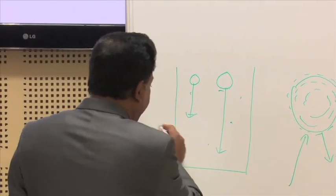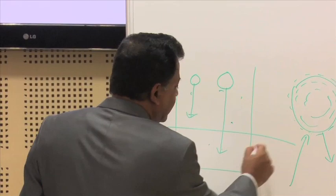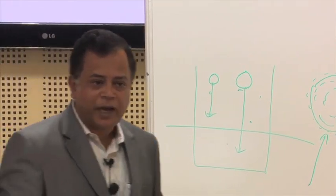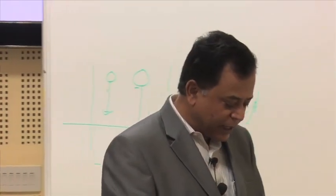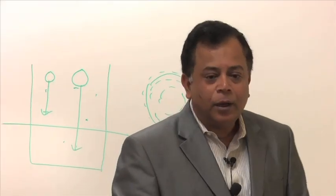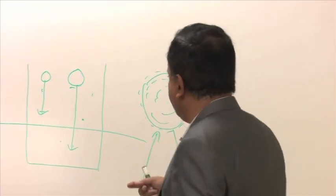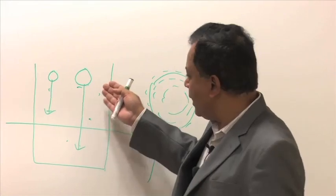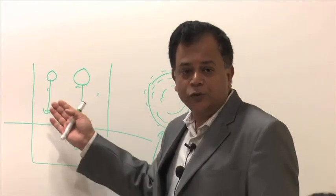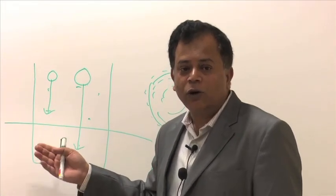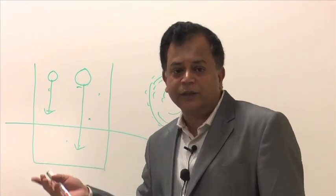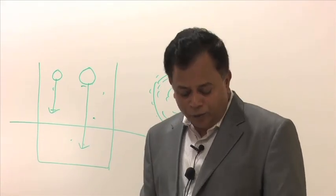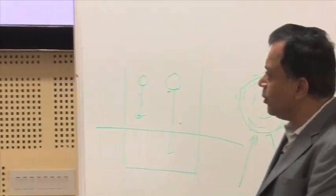If by some means I can separate them, I can mechanically use this property of particles in a fluid medium to separate these 2 sizes. That is called classification - that is how we use the theory of fluid mechanics to separate them.